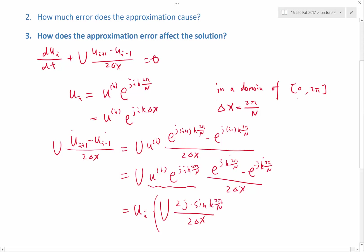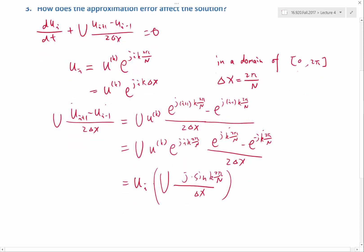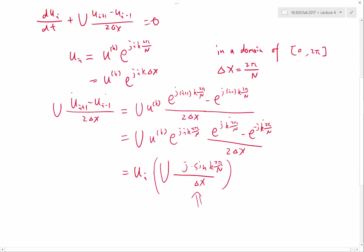And the purely imaginary number is going to be 2 times j times sine of k 2π over n. So let's just cancel these twos up here and down here. All right. So this is my lambda_k, my amplification factor.